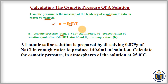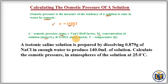Here, π is osmotic pressure measured in ATM. i is the van't Hoff factor — it represents the number of dissociated ions present in a solution. M is the concentration of the solution, that is molarity, with units of moles per liter. R is the gas constant with a value of 0.0821 ATM·L / mol·K, and T is temperature in Kelvin.